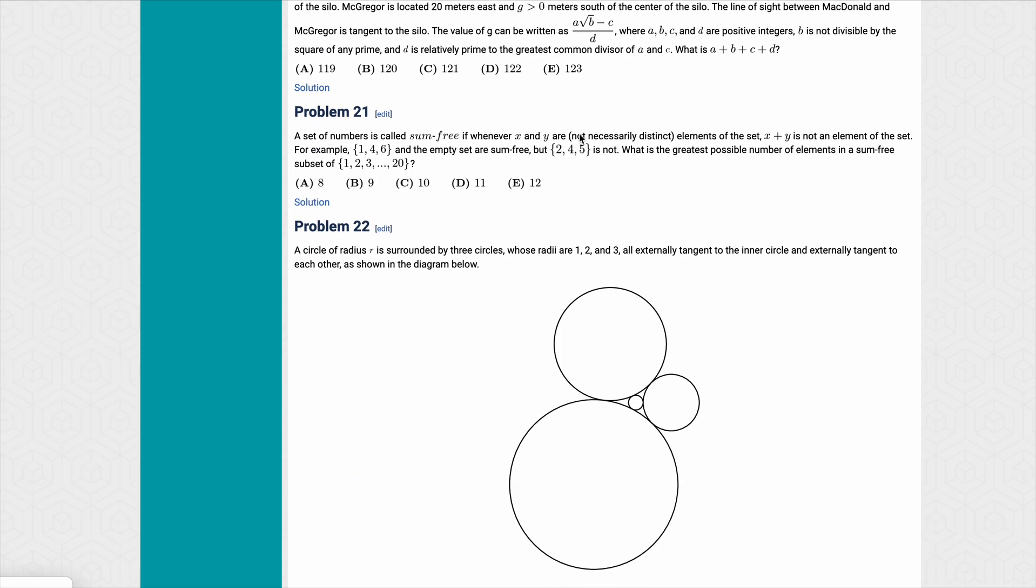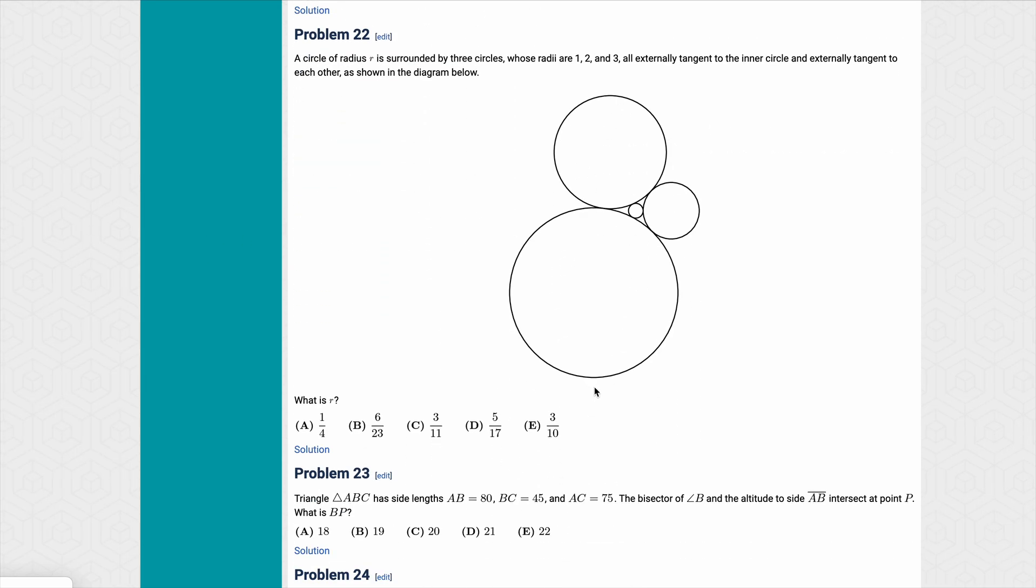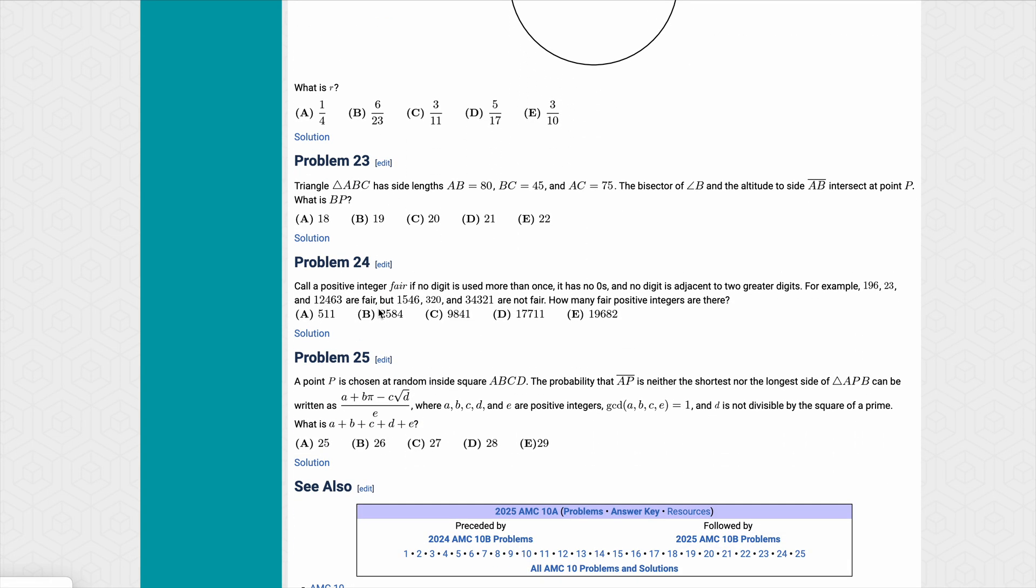And then some of these end questions, like 21, you can kind of guess it. 22 was kind of like, you know, you either know it or you don't. 23 was a little bit tricky. 24, same thing. 25, maybe a little bit on the easier end, but still.